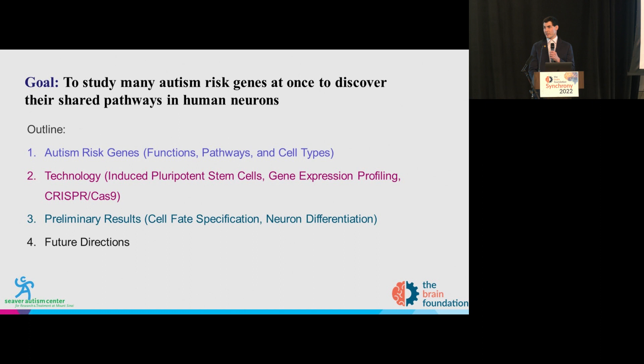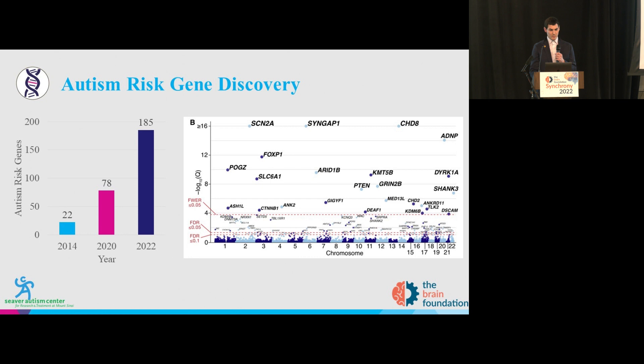My name is Matt Lally. I'm an instructor working with Dr. Joseph Buxbaum at the Seaver Autism Center, where our goal is to connect the rare autism mutations, ultimately, to common treatments. Our goal is to study multiple autism risk genes at once so that we can discover their shared mechanisms, and we want to do this in an autism-relevant system using human neurons.